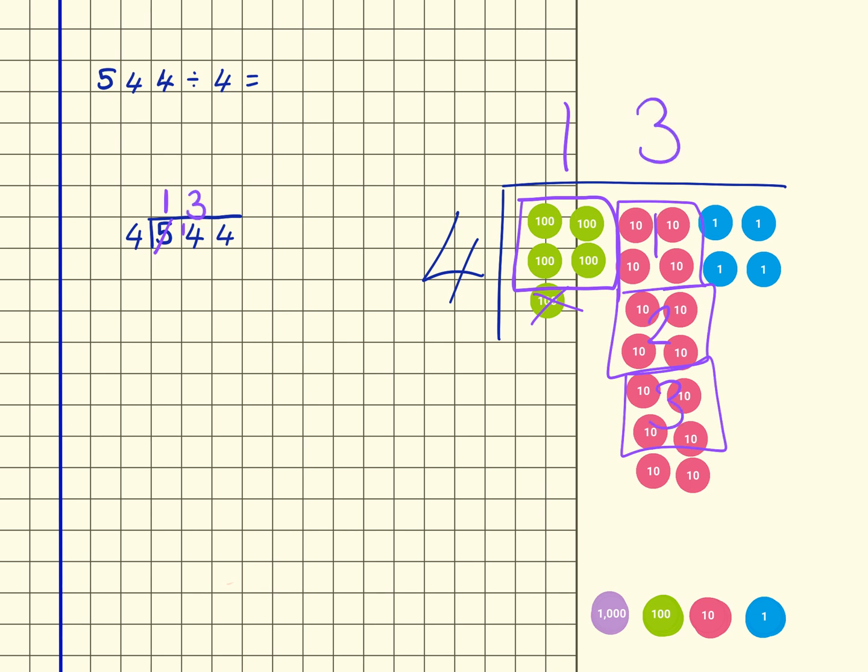Down at the bottom we've got two tens remaining, so they get regrouped into this column. I would represent that here with a 2, so 24 is what I've now got.